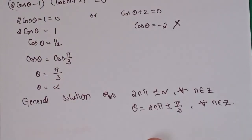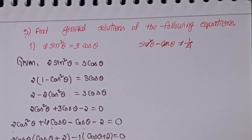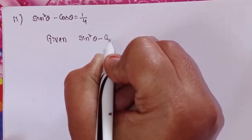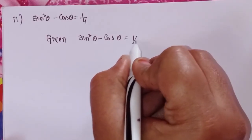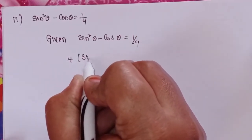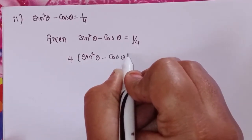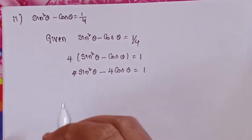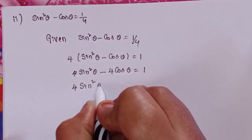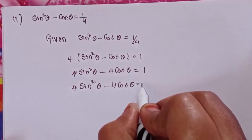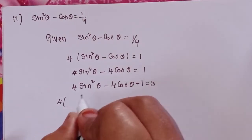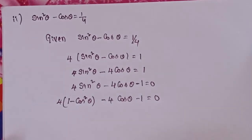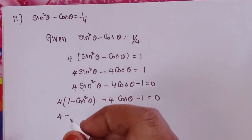Next, second problem: given sin squared theta minus cos theta equal to 1/4. Cross multiplication gives 4 sin squared theta minus cos theta equal to 1, which rearranges to 4 sin squared theta minus 4 cos theta plus 1 equal to 0 minus 1. Using sin squared theta = 1 minus cos squared theta: 4(1 minus cos squared theta) minus 4 cos theta minus 1 equal to 0.